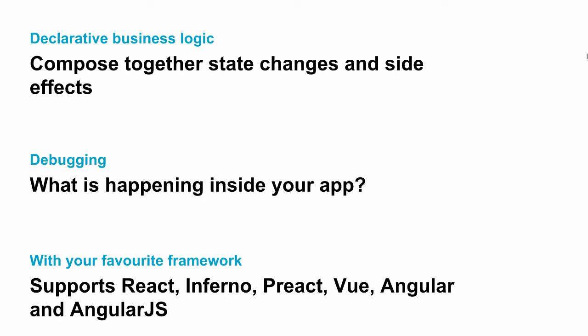Cerebral is about state and side effects. It creates an abstraction around state changes and running side effects which allows you to express it declaratively.